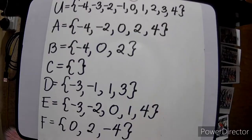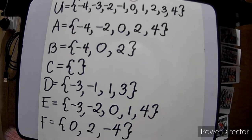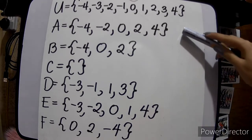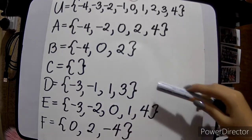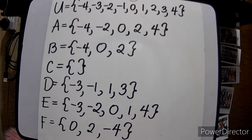What we will cover is the intersection and complement of given sets. We have a universal set from negative 4 to positive 4, and we are given sets A, B, C, D, E, and F.